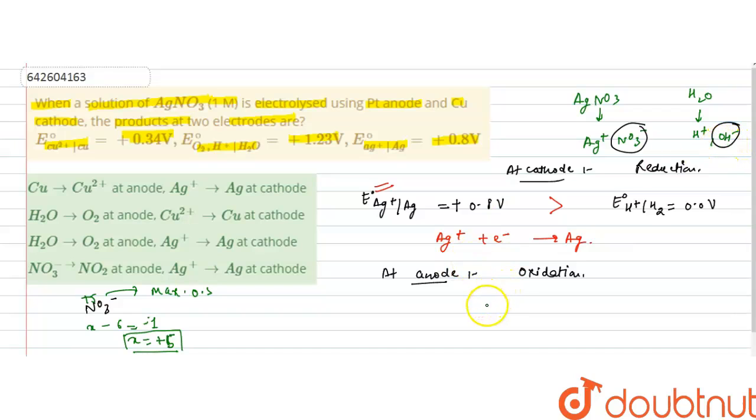...oxidized because OH⁻ ions have lower discharge potential, lower discharge potential, so they will be oxidized.